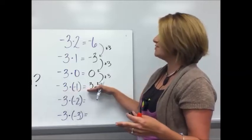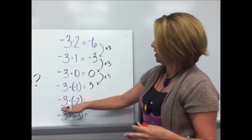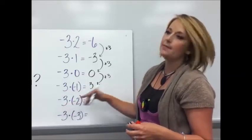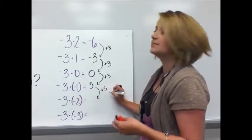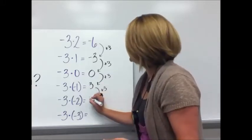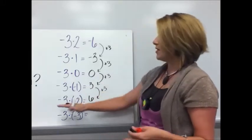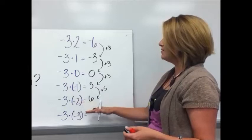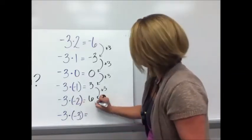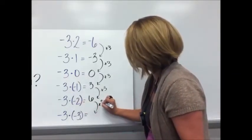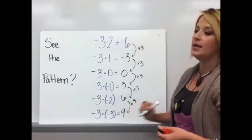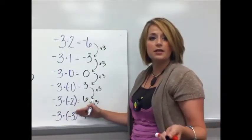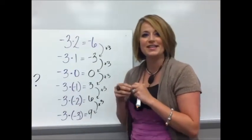Therefore negative three times negative one is a positive three. Which makes sense. A three and a one gives me a three. Okay what about negative three times negative two? Well I'm going to add three again because multiplication is repeated addition. Three plus three is six. Therefore negative three times negative two is a positive six. Follow the pattern add three. Six plus three is nine. Negative three times negative three is a positive nine.